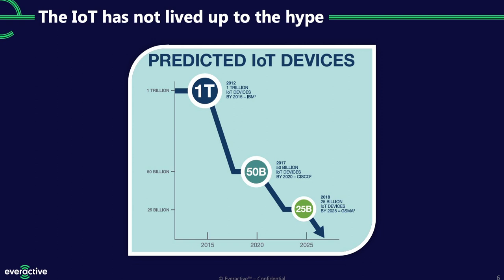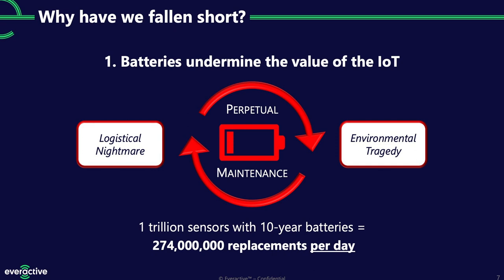The IoT has not lived up to the hype. Back in 2012, the IBM Watson team predicted a trillion IoT devices by 2015 — that didn't happen. Expectations keep getting adjusted lower every time, and it's not because people don't want the data. They desperately want to connect older assets to the IoT, but there are real limitations. Today we're not even in the billions for IoT-attached devices, especially in industrial environments.